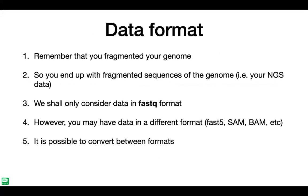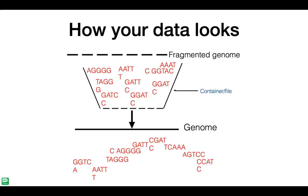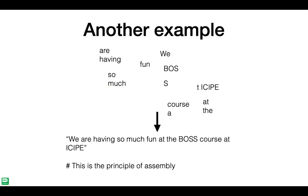The data format for sequence assembly is typically FASTQ for NGS data, though Oxford Nanopore gives FAST5 which can be converted to FASTQ, or you might have data in compressed aligned SAM or BAM format. Essentially you have these fragments of DNA in a file and the assembly process looks for overlaps between sequences and contiguates them into a genome.